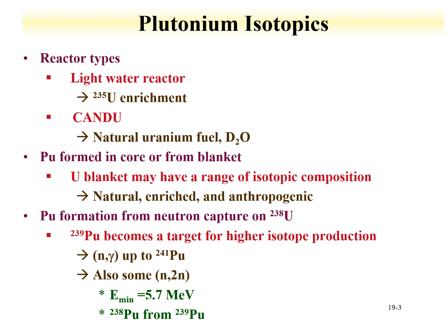Plutonium isotopics provide excellent signatures for nuclear forensics applications. Plutonium can be produced in reactors through neutron capture on uranium-238 and subsequent decays: uranium-239, neptunium-239, plutonium-239. Two reactor types of concern are light water reactors and CANDU reactors. Light water reactors use regular water as coolant with enriched uranium-235 fuel, providing a signature that transmits to the plutonium isotopics. The CANDU reactor — Canadian Deuterium Uranium — uses natural uranium with a deuterated water (D₂O) coolant, and the plutonium isotopics will be impacted by this fuel.